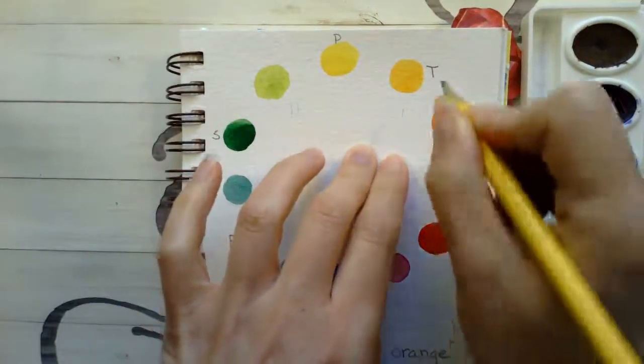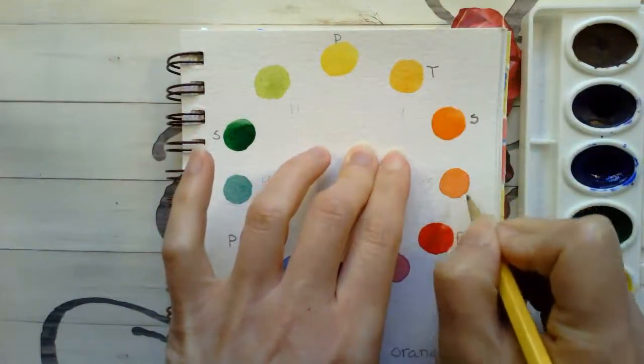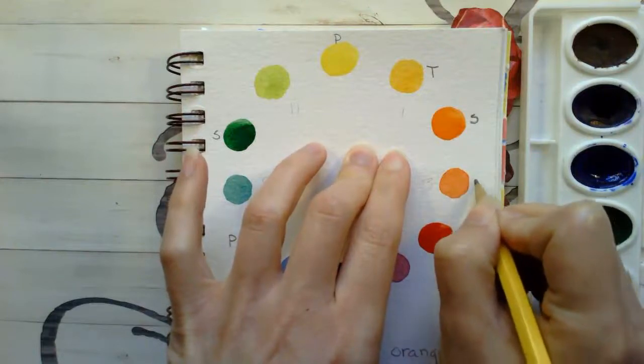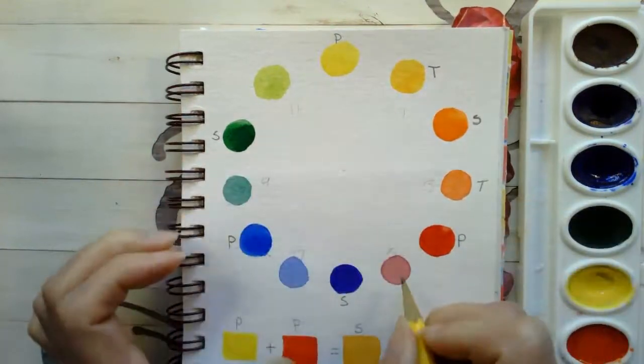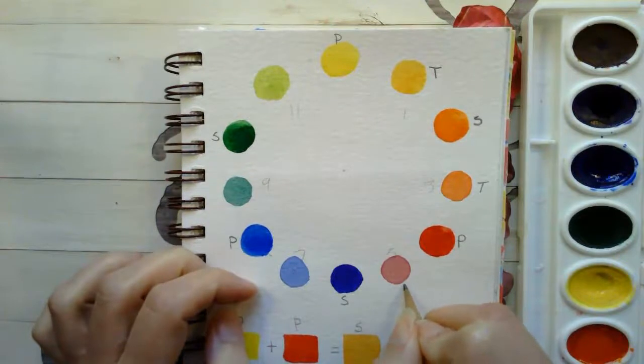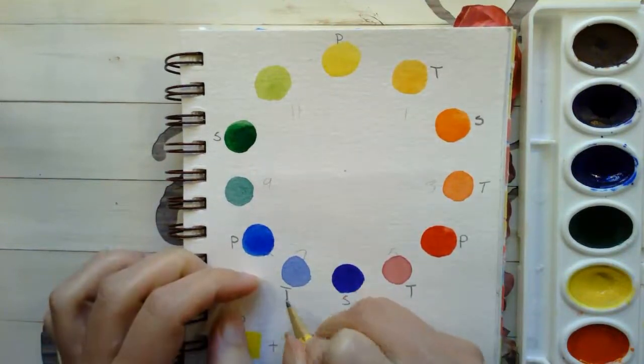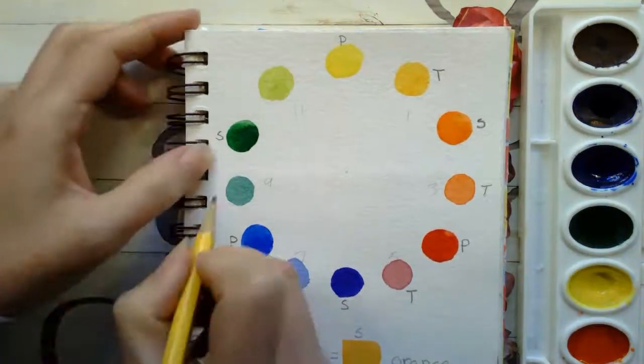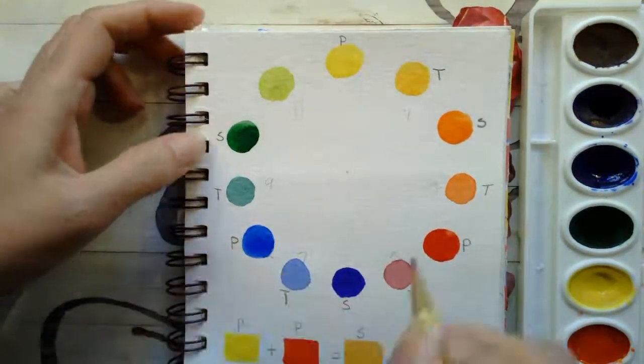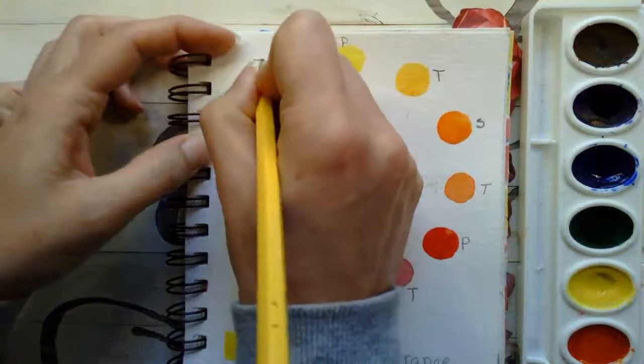So yellow orange is a tertiary. Red orange is a tertiary. Red violet is a tertiary. Blue violet is a tertiary. Blue green is a tertiary. And yellow green is our last tertiary.